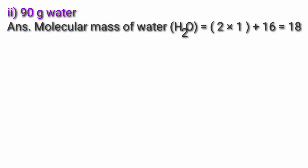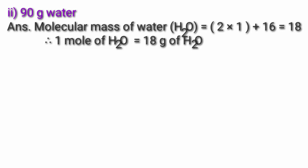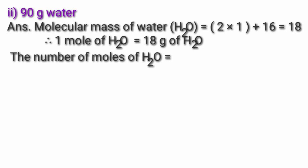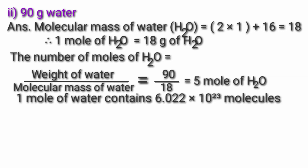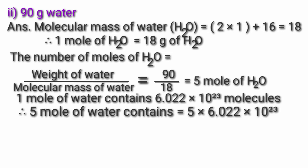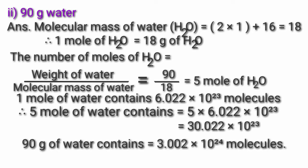Second, 90g water. Molecular mass of water H₂O = (2×1) + 16 = 18. So 1 mol of H₂O = 18g H₂O. Number of moles of H₂O = weight of water ÷ molecular mass = 90 ÷ 18 = 5 mol of H₂O. 1 mol of water contains 6.022×10²³ molecules. Therefore 5 mol of water contains 5 × 6.022×10²³ = 3.011×10²⁴ molecules. So 90g water contains 3.011×10²⁴ molecules.